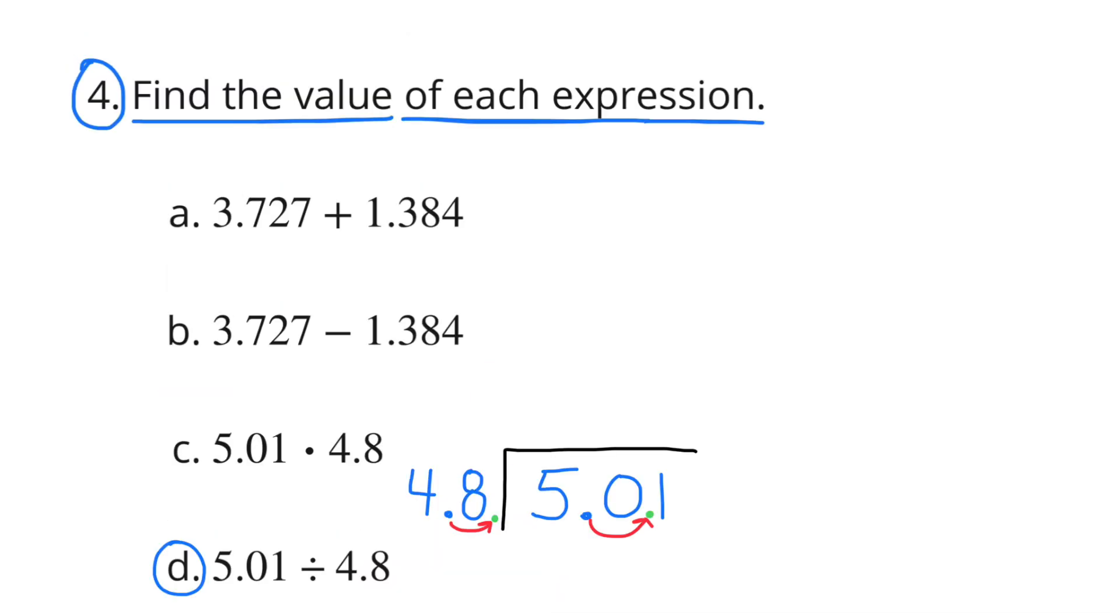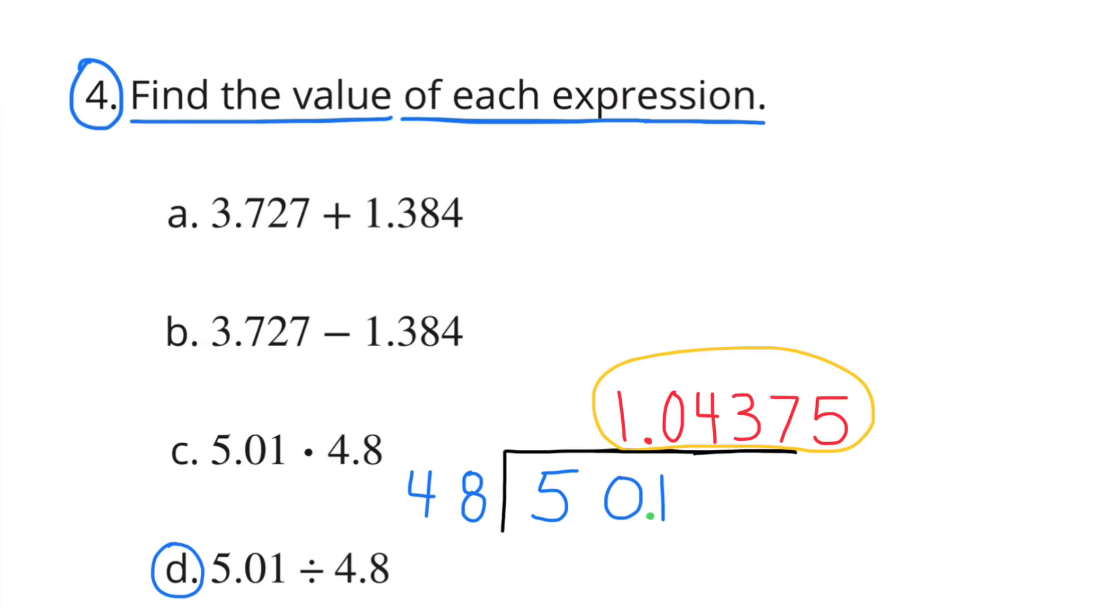D. 5 and 1 hundredth divided by 4 and 8 tenths. If we make the 4 and 8 tenths 10 times larger, the number becomes 48. Then we'd also have to make the 5 and 1 hundredth 10 times larger, and that would become 50 and 1 tenth. So 5 and 1 hundredth divided by 4 and 8 tenths is equivalent to 50 and 1 tenth divided by 48. And the quotient is 1.04375 or 1 and 4,375 hundred thousandths.